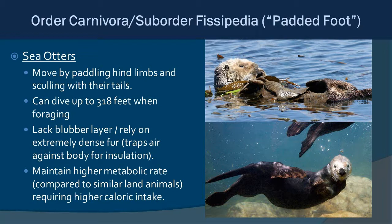Sea otters are relatively late arrivals to the marine mammal lifestyle, and as a result they lack many adaptations seen in other groups — for example, they have no blubber layer. Instead, they rely on their fur, which has the highest density of any animal in the kingdom. It traps air against their body, insulating them so their skin doesn't get wet — like wearing a dry suit. They must groom constantly to maintain this coat and require a relatively high metabolic rate compared to similar land animals.